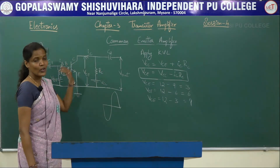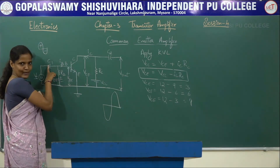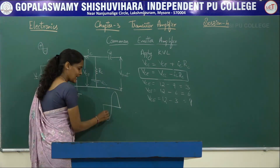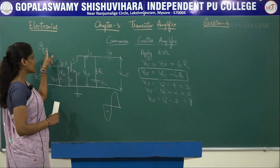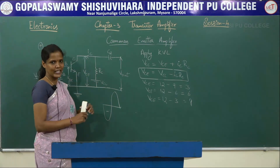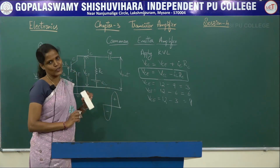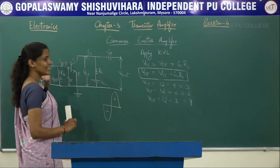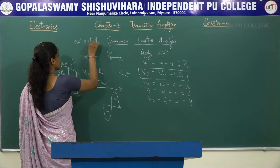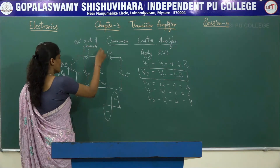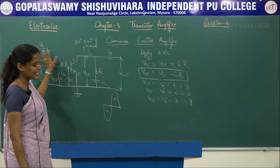So for the positive half cycle appearing at the input side, we get the amplified version of the negative cycle at the output. And for the negative half cycle at the input, we get the positive amplified version at the output. Here, the output and the input are 180 degrees out of phase — that is, there is a 180 degree phase shift between the input and the output cycle.